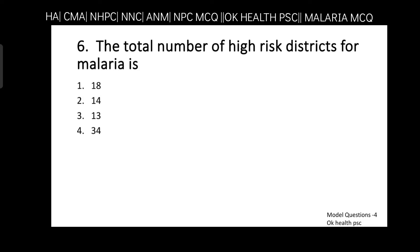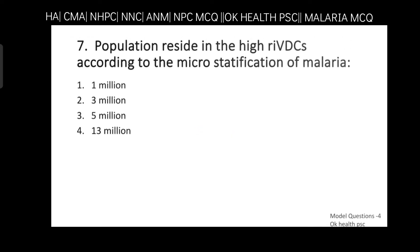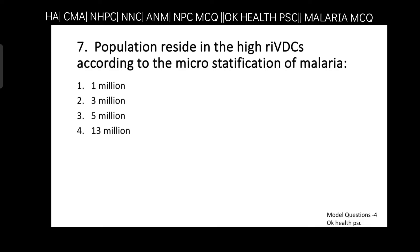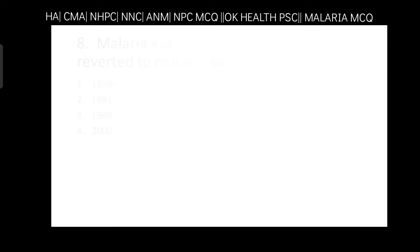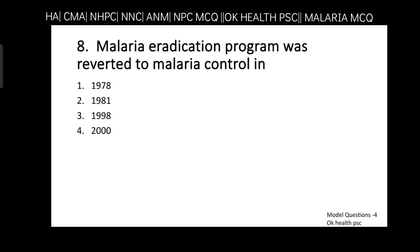Answer to question six is option three — 13. The total number of high-risk districts for malaria is 13. Question number seven: the population residing in the highest risk VDCs according to the micro-stratification of malaria is 1 million, 3 million, 5 million, or 13 million? The answer is option one — 1 million.